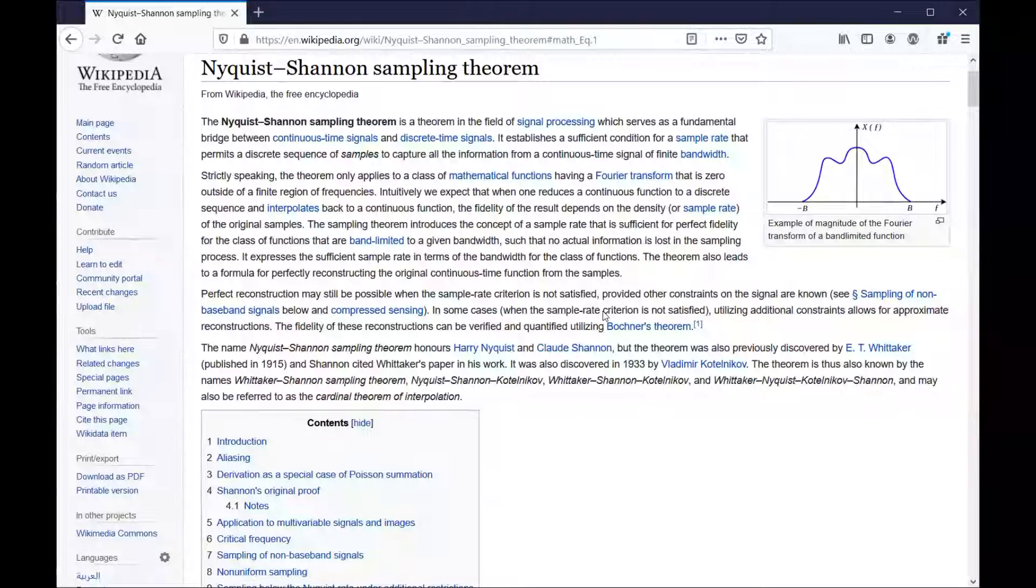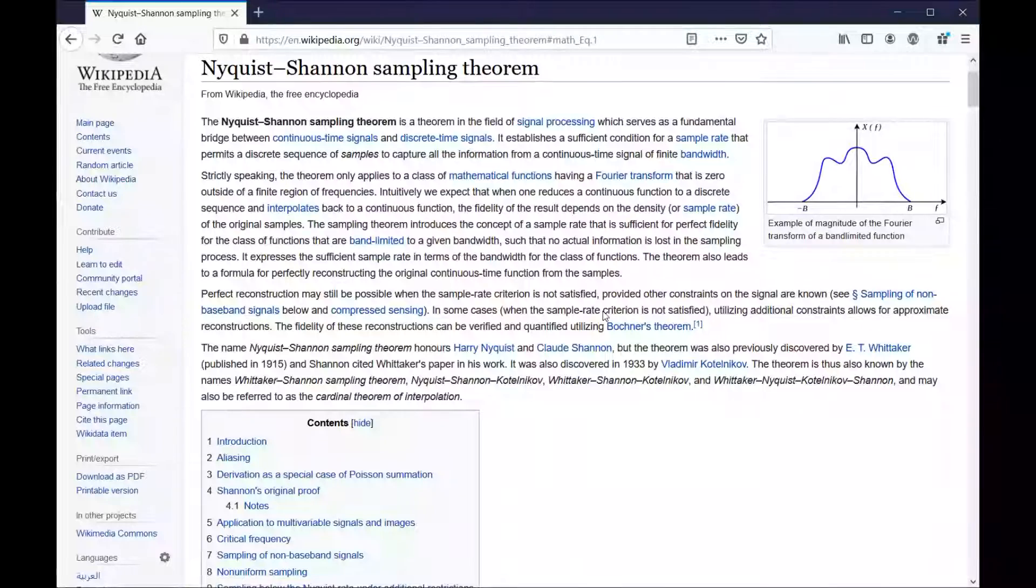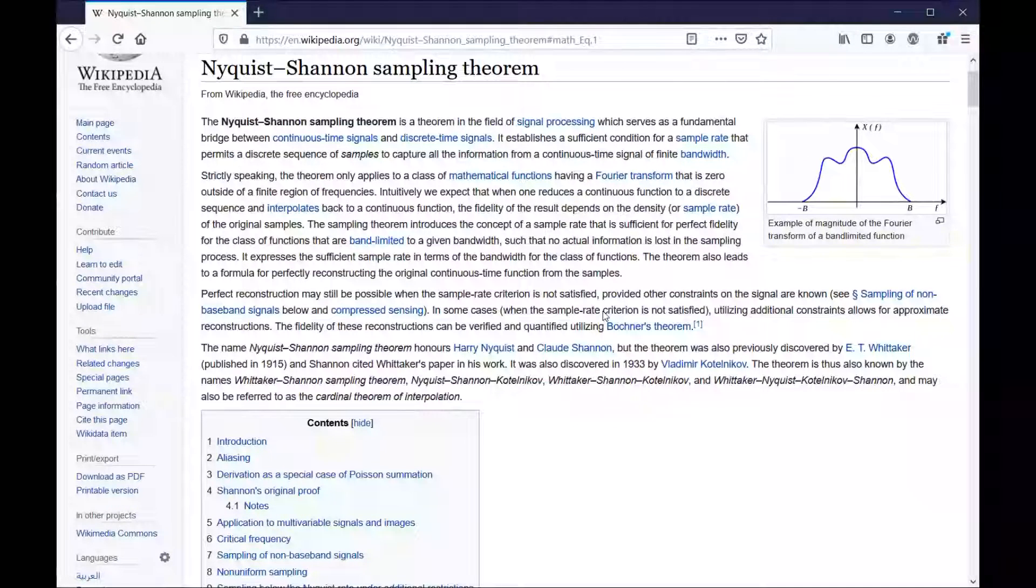So it's important to create accessible STEM content, obviously, and this is a good example of why. So to start off with, I will have NVDA read the beginning of this Wikipedia article so you can get a sense for how a screen reader sounds if you haven't heard it before. The Nyquist-Shannon sampling theorem is a theorem in the field of signal processing, which serves as a fundamental bridge between continuous time signals and discrete time signals. It establishes a sufficient condition for a sample rate that permits a discrete sequence of samples to capture all...